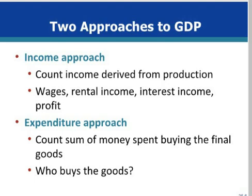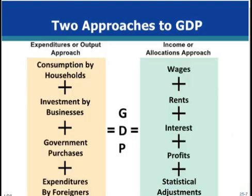Here the two approaches to measuring GDP are illustrated. On the left, the expenditures approach measures GDP as the sum of four items: one, consumption by households; two, investment by businesses; three, government purchases; and four, expenditures by foreigners.